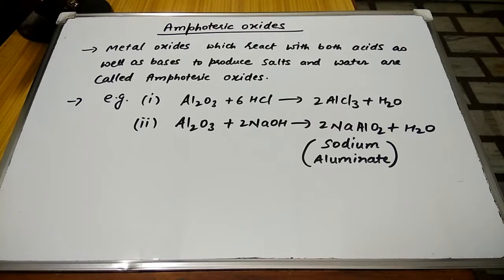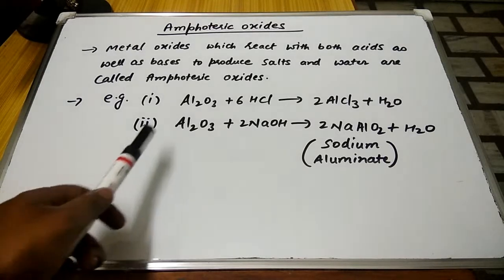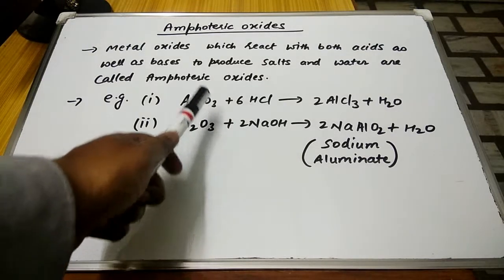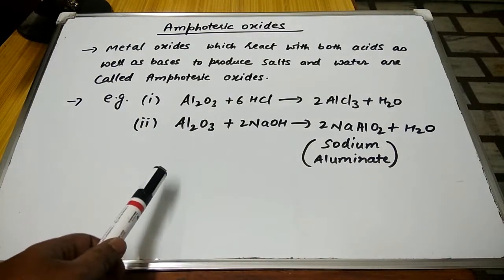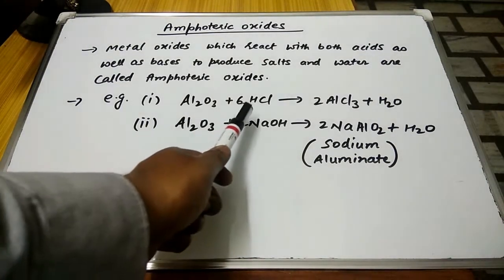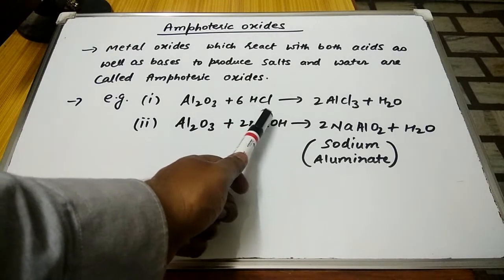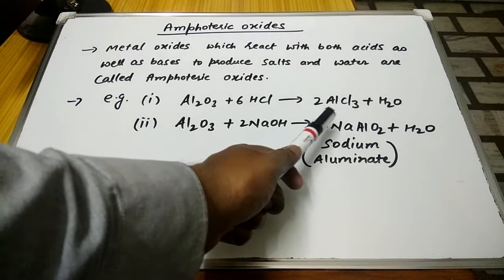Let us see some examples. Aluminum oxide is behaving like an amphoteric oxide. When it reacts with HCl (that is, acid), it gives AlCl3 (aluminum chloride)